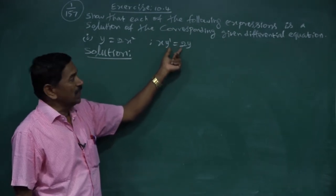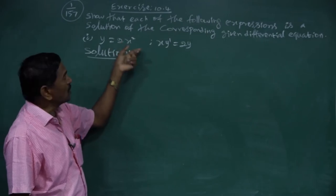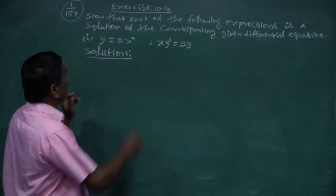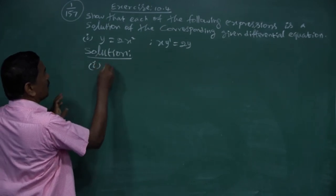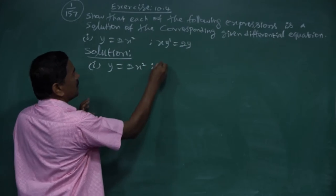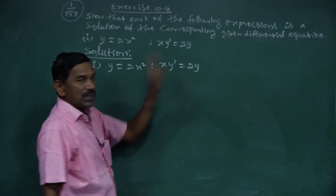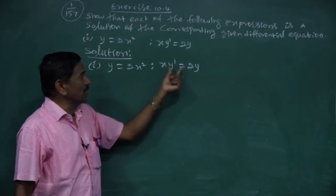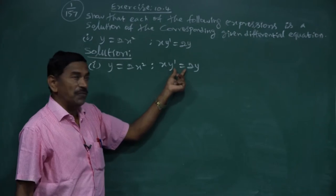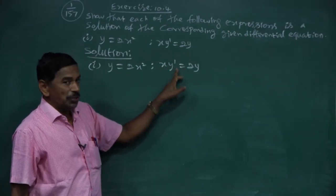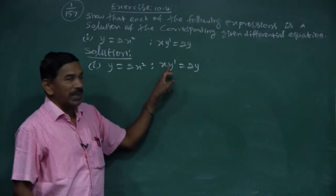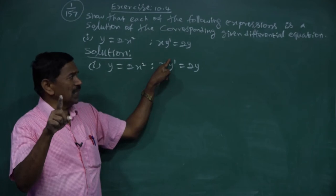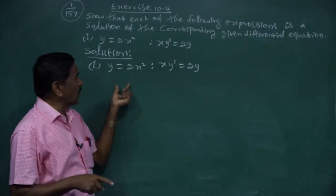We want to show this differential equation has a given solution. The solution is y = 2x². Now, since the differential equation involves y' (one-time differentiation), we take the given curve y = 2x² and differentiate it once with respect to x.